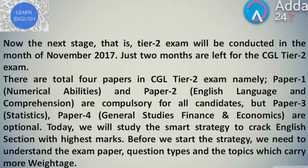Just two months are left for the CGL Tier 2 exam. There are total four papers in CGL Tier 2 exam, namely Paper 1, Numerical Abilities, and Paper 2, English Language and Comprehension, which are compulsory for all candidates. But Paper 3, Statistics, and Paper 4, General Studies, Finance and Economics, are optional.